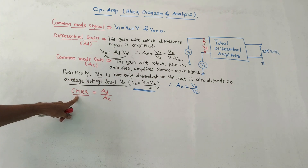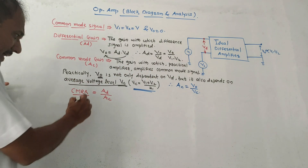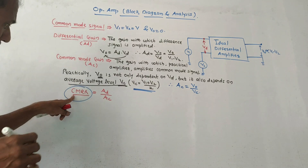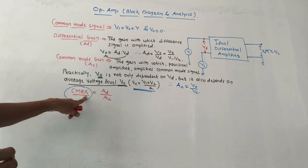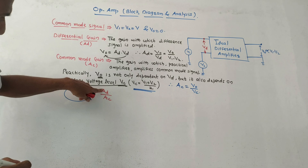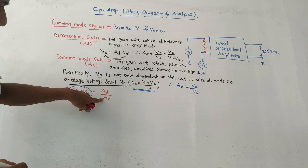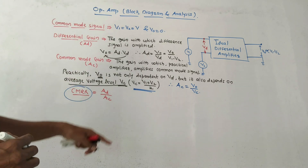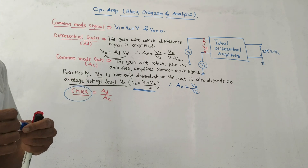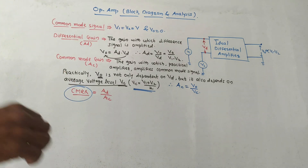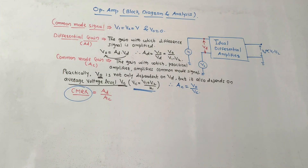The next term is CMRR — Common Mode Rejection Ratio. CMRR is basically the ratio of Ad to Ac. These are the parameters required for solving the numericals.